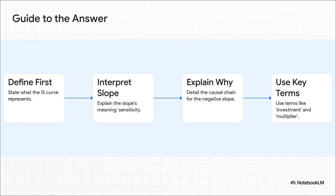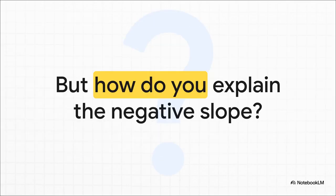Think of this as a four-step recipe for a perfect score. First, you define what it is, nice and clear. Second, you interpret what the slope means — that hits the first part of the question directly. Third, and this is key, you explain why it slopes that way, laying out the cause and effect. And finally, you sprinkle in the right economic terms to show you really know your stuff. That third step is absolutely crucial — it's where you separate yourself from the pack. It's not enough to just say there's an inverse relationship. An examiner wants to see that you get the mechanism, the how and the why behind it.